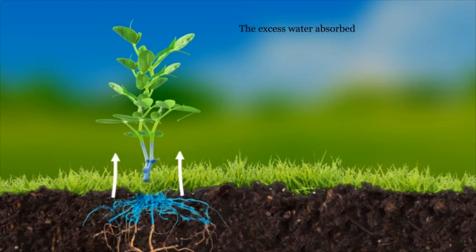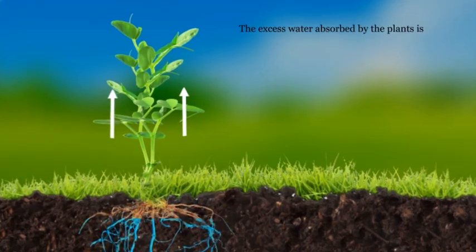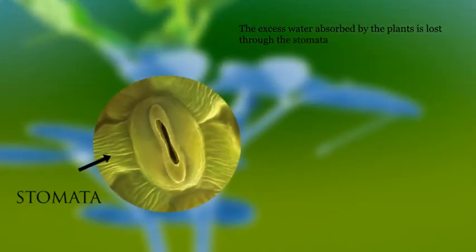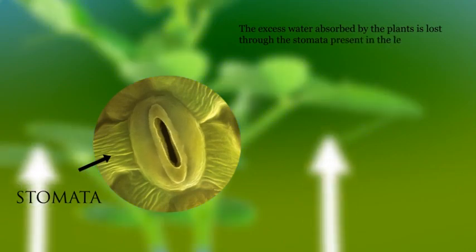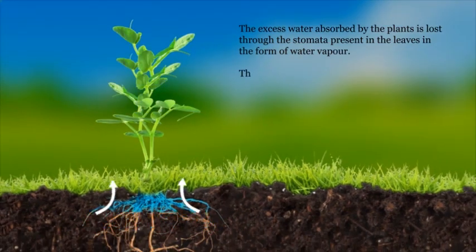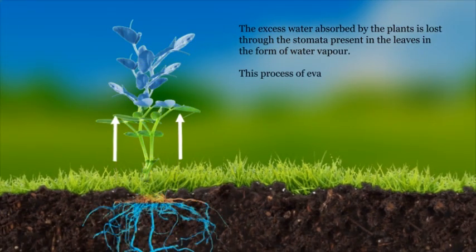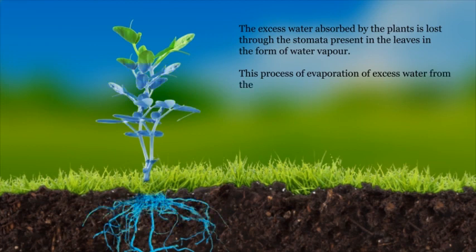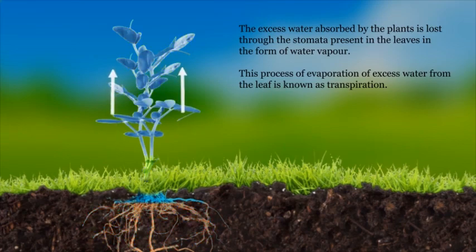The excess water absorbed by the plant is lost through the stomata present in the leaves in the form of water vapor. This process of evaporation of excess water from the leaf is known as transpiration.